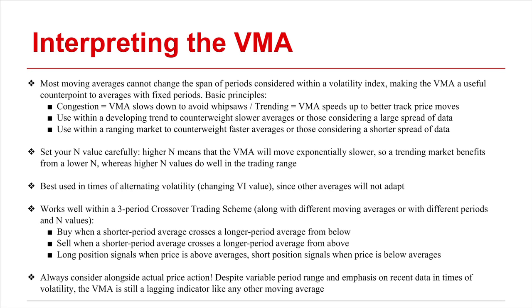It's important to set and experiment with your N value, since a higher N will result in an exponentially slower VMA. The VMA is probably most effective in times of fluctuating volatility, since other averages will not be able to adapt.